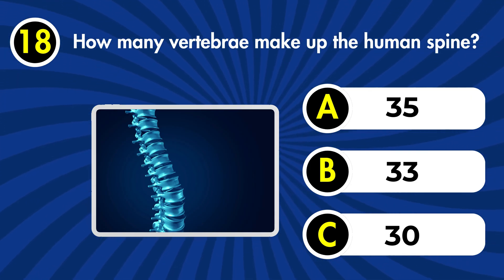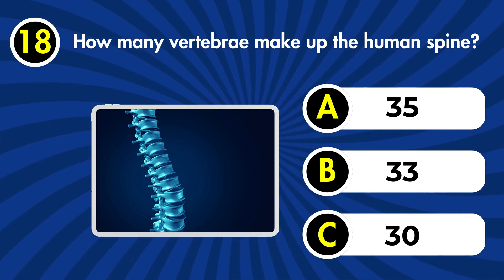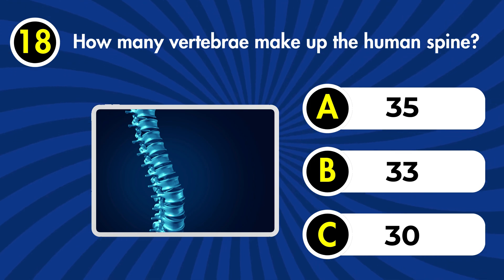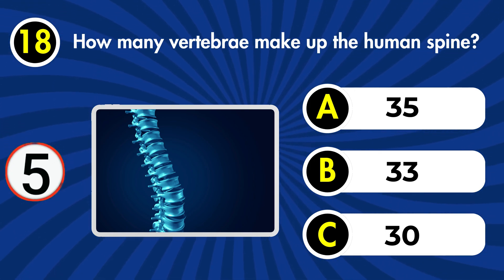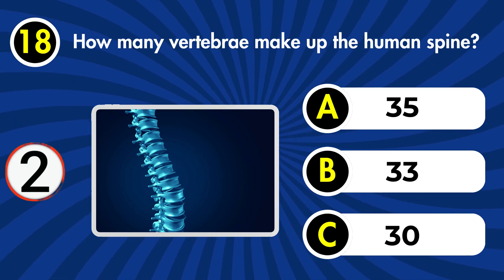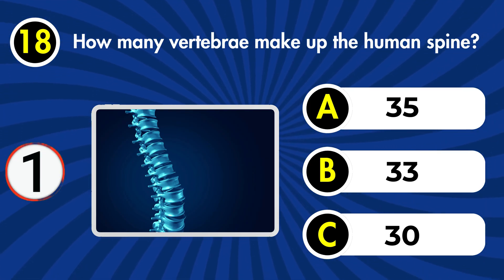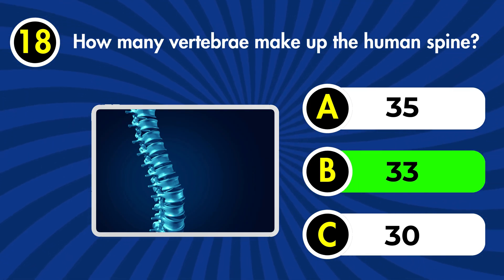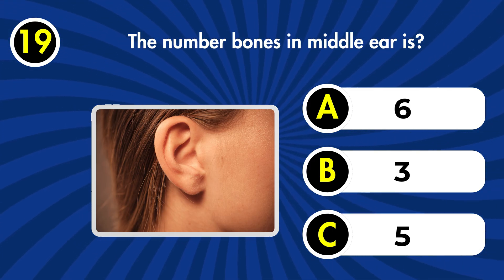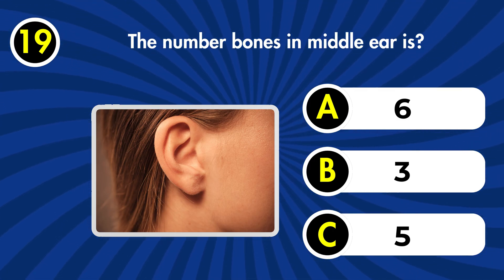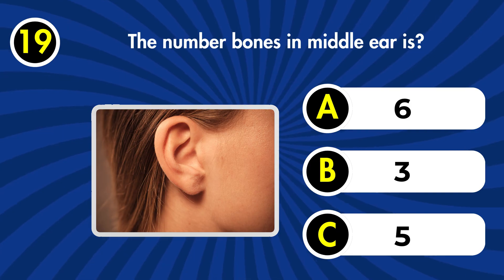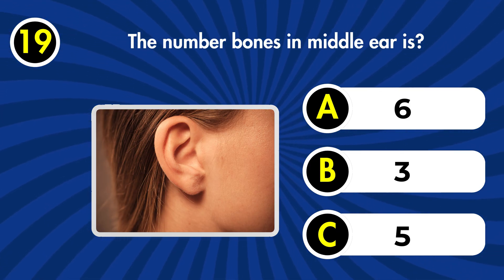Next question: how many vertebrae make up the human spine? a) 35, b) 33, c) 30, d) 39. Correct answer: b) 33.